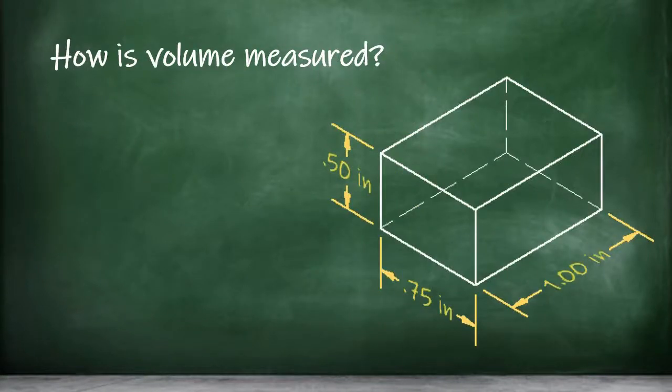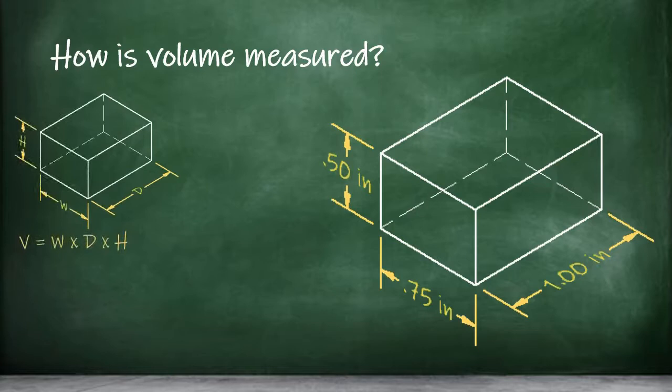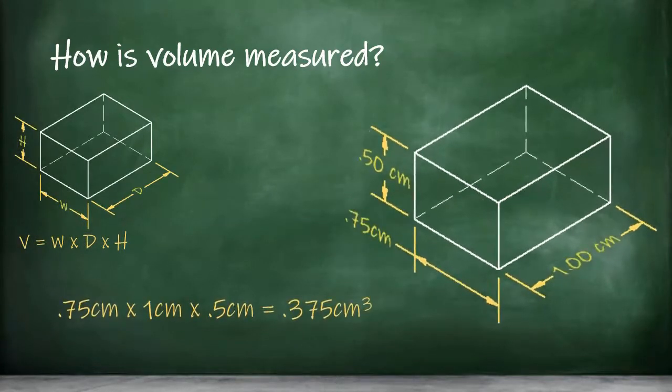We measure volume in cubed units, so if the width, depth, and height of a piece of material were measured in inches, we would calculate the volume in cubic inches. If the dimensions were measured in centimeters, then we would calculate the volume in cubic centimeters. If it were feet, we would measure volume in cubic feet, and the same is true no matter what unit is used to measure the dimensions of the space.